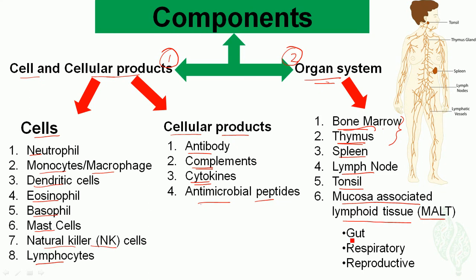MALT is also divided into the gut-associated lymphoid tissue, the respiratory-associated lymphoid tissue, and the reproductive organ-associated lymphoid tissue. We have tonsils here, the thymus here, and the spleen here on the left side of the abdomen.